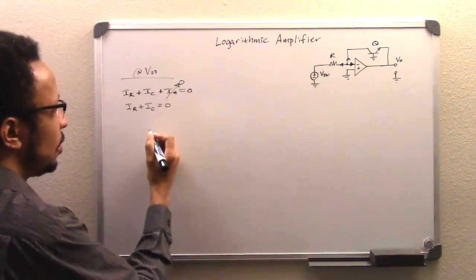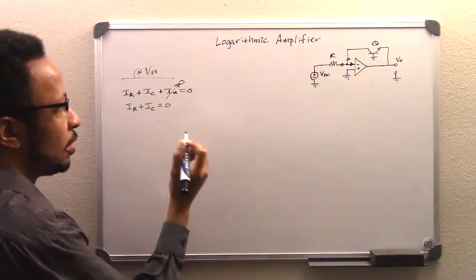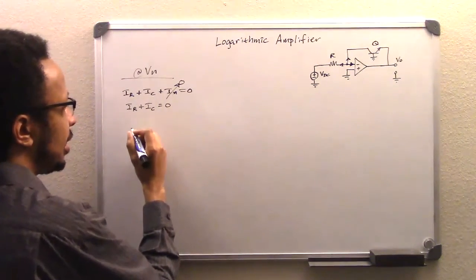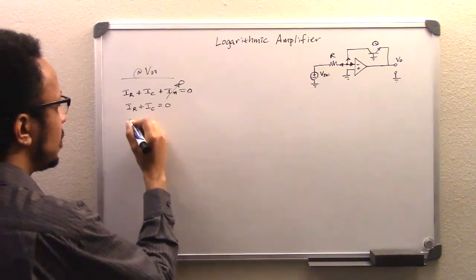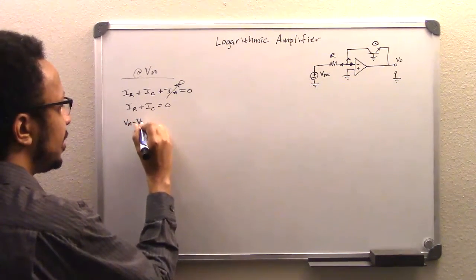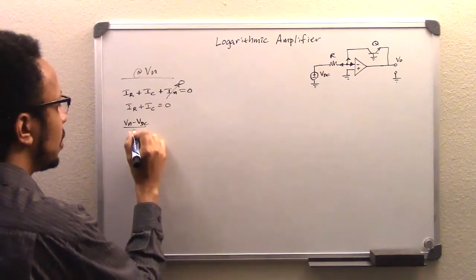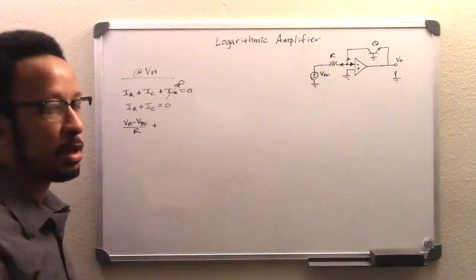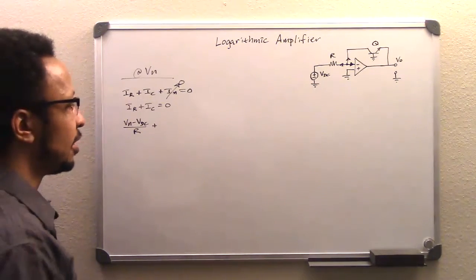Next, we're going to take notice of the fact that in order to get IR, we're going to have VN minus VDC over R. And IC, which is the collector current of our transistor,